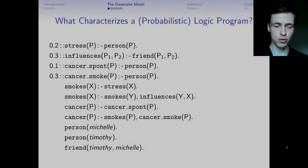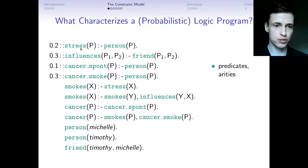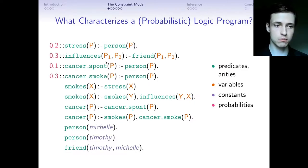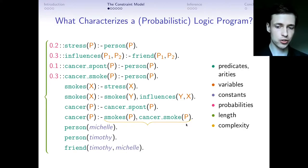For a program like this, what parameters should the model have? The characteristics that describe its constituents include: predicates, each associated with an arity; variables; constants; probabilities; the number of clauses in the program; and a measure of clause complexity — specifically the body, which is often a conjunction of literals but can be an arbitrary formula.